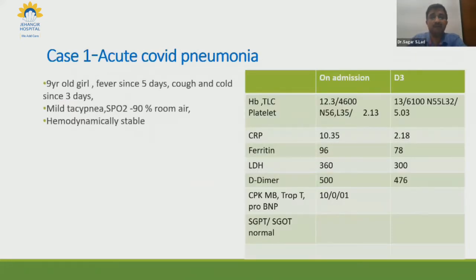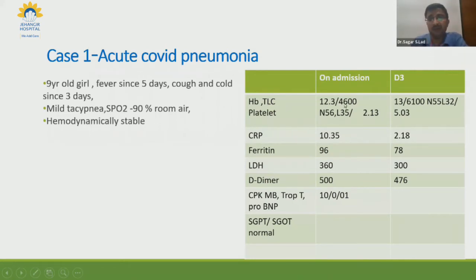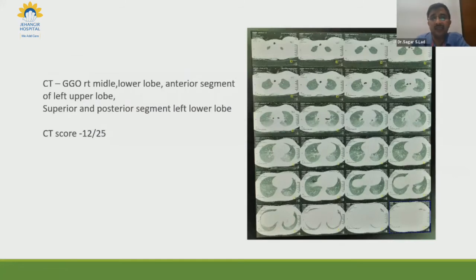The first case is acute COVID pneumonia in a nine-year-old girl with fever for five days and cough and cold for three days. The child had minimal tachypnea and was saturating 90% on room air but was hemodynamically stable. Investigations showed WBC count of 4,600; CRP was normal; LDH was slightly elevated. Considering the respiratory status, a chest X-ray was done followed by HRCT, which showed ground glass opacity in the right middle and lower lobes and the anterior segment of the left upper lobe and superior and posterior segment of the lower lobe. CT severity score was 12 out of 25.